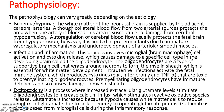The pathophysiology can vary greatly depending on the etiology. With ischaemia and hypoxia, the white matter of the neonatal brain is supplied by the adjacent cerebral arteries. Although collateral blood flow from two arterial sources protects the area when one artery is blocked, this area is susceptible to damage from cerebral hypoperfusion. Autoregulation of cerebral blood flow usually protects the fetal brain from hypoperfusion; however, it is limited in preterm infants due to immature vasoregulatory mechanisms and underdevelopment of arteriolar smooth muscles.